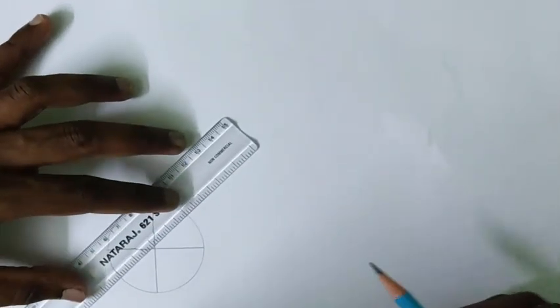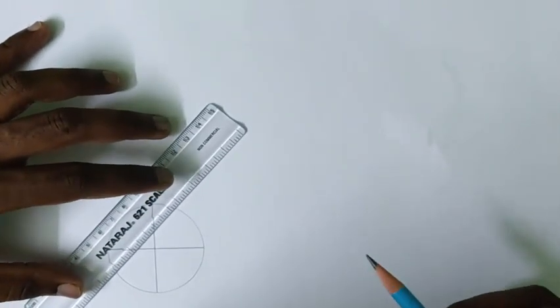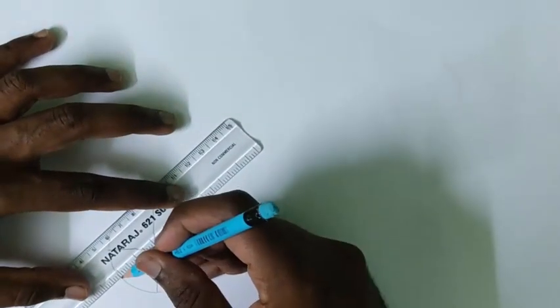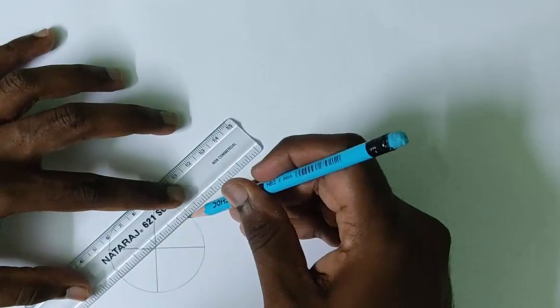Then a line at 45 degrees that should be measured using a drafter or a protractor. And again a 45 degree towards the left hand side.